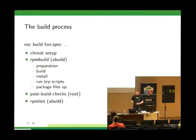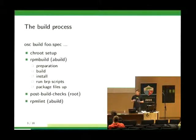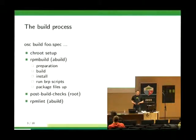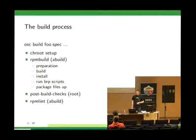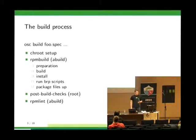RPM has several steps. First, it unpacks the sources in the preparation step, applies your patches, then builds the package with the rules you specified — usually make. Then it installs the package, essentially make install. After that, the first round of check scripts runs.